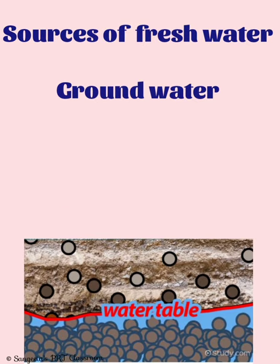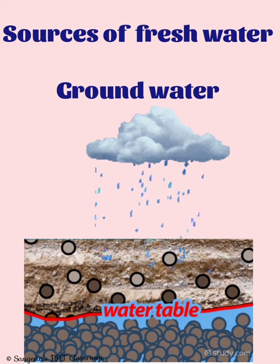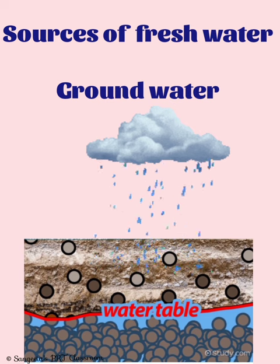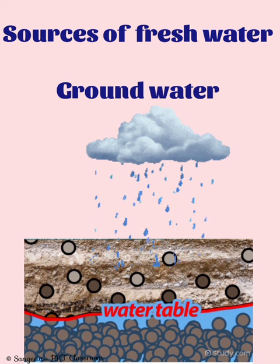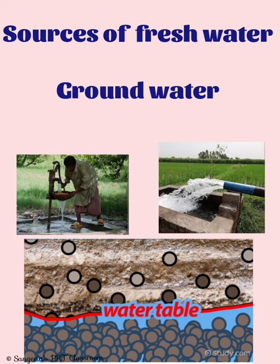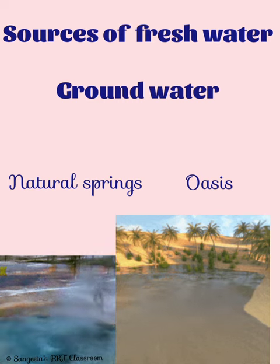The next source of fresh water is ground water. It is the water present below the surface of earth — basically rain water that soaks into the soil and is stored in the tiny spaces between rocks and particles of soil. This water is taken out by wells and hand pumps, and sometimes comes out as natural springs or as an oasis in deserts.